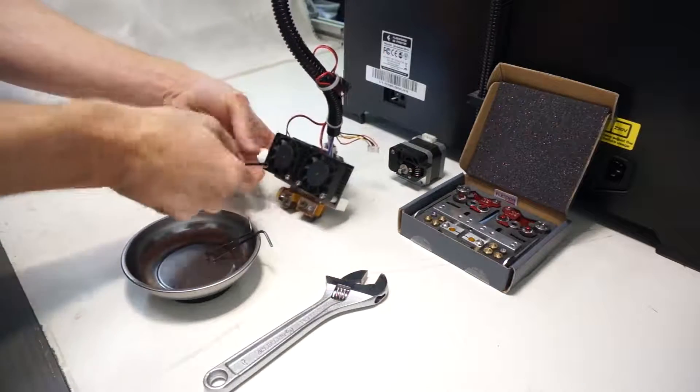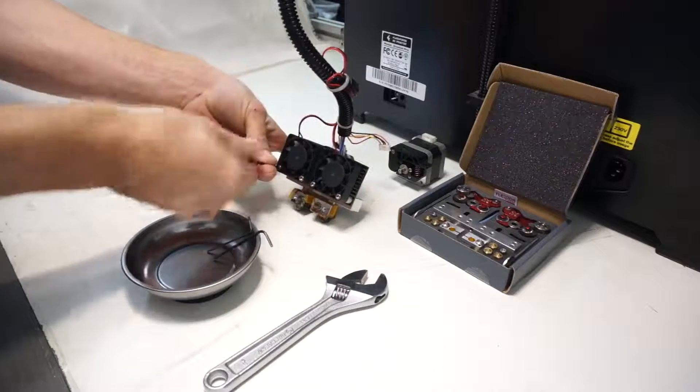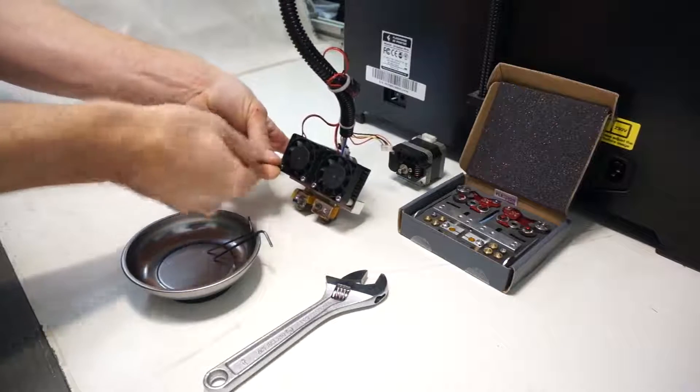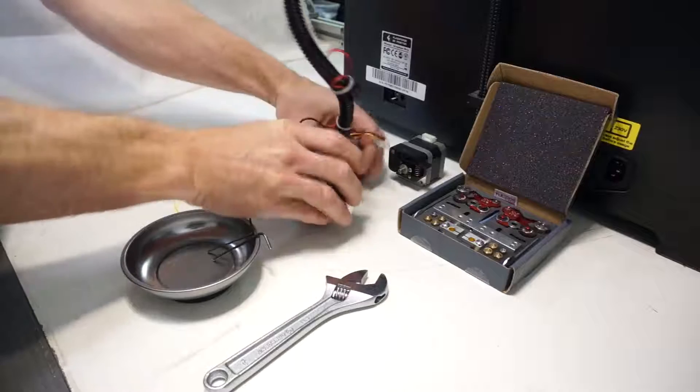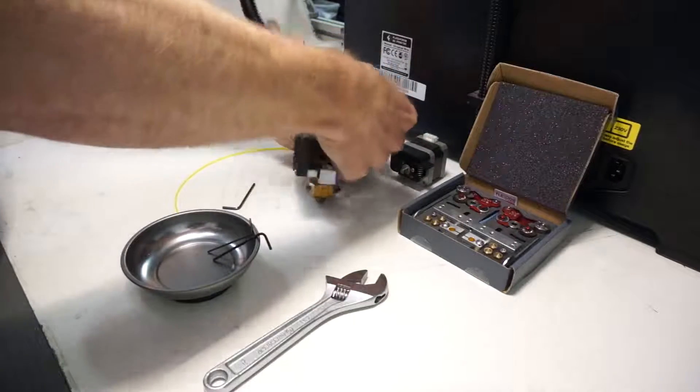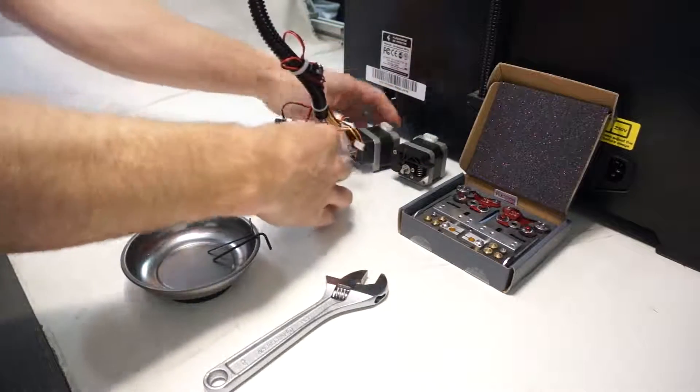Start by disassembling the old extruder beginning with the main screws that go through the fan and into the stepper motors. And as you remove them you can pull the stepper motor and drive assembly off the back.